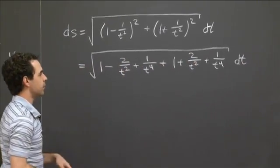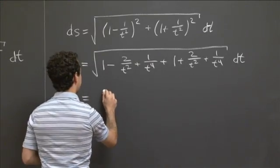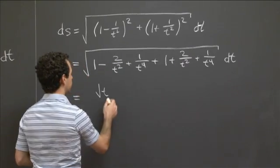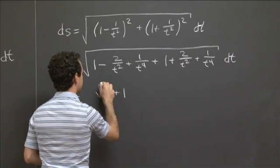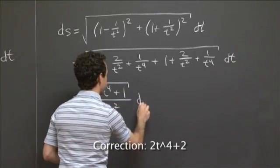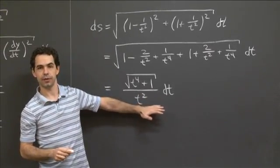All right, and if we put all this together over a common denominator and simplify it a little bit, we can see that the 1/t² terms cancel out, and we end up with something like the square root of (t⁴ + 1)/t² dt. OK, so this is all this ds that we've been playing with.